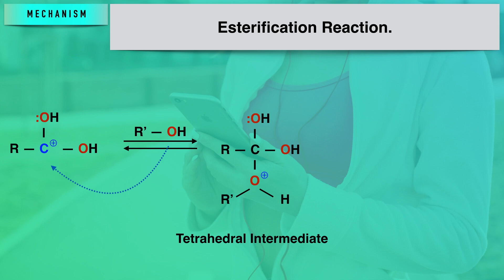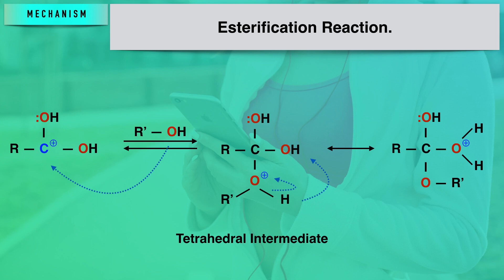This tetrahedral intermediate will be further converted into another form of tetrahedral intermediate. The proton present here — with oxygen being positively charged — will pull the bonding pair of electrons towards itself. Hydrogen is released and further interacts with the hydroxyl group, resulting in the formation of an OH₂ group. However, since oxygen has shared its lone pair of electrons to interact with the proton, oxygen develops a positive charge, resulting in a second form of tetrahedral intermediate.